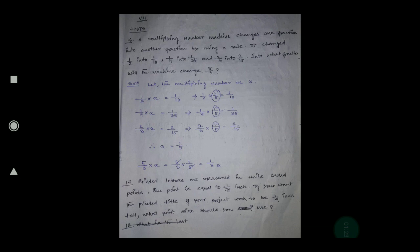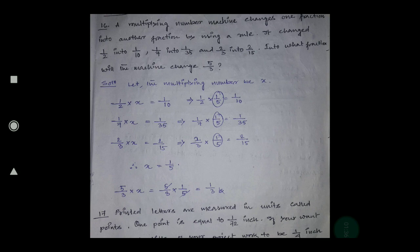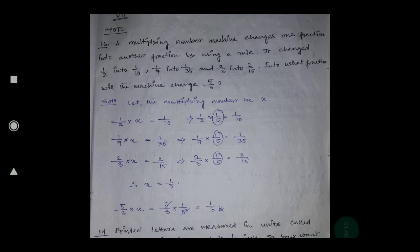So let's start. In the last video we discussed up to question number 15 of Exercise 2b. Now question number 16: a multiplying machine changes one fraction into another fraction using a rule. That means if you put one number into the machine, it multiplies that number based on its rule.